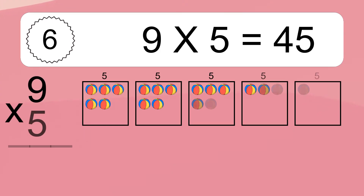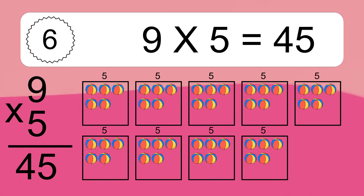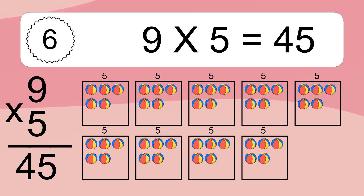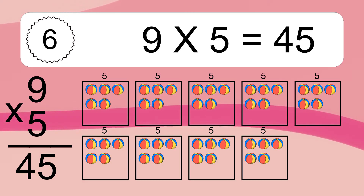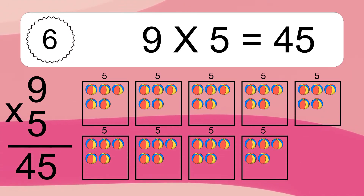9 times 5 equals 45. We have 9 boxes, and each box has 5 colorful balls inside. If you count all the balls in all the boxes together, you will have 9 times 5 balls. This equals 45 balls.